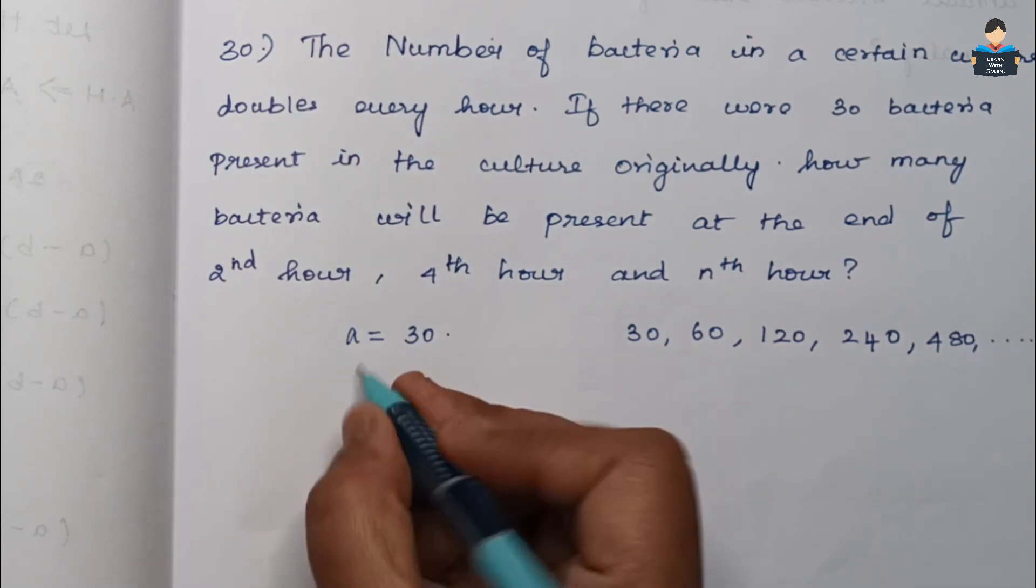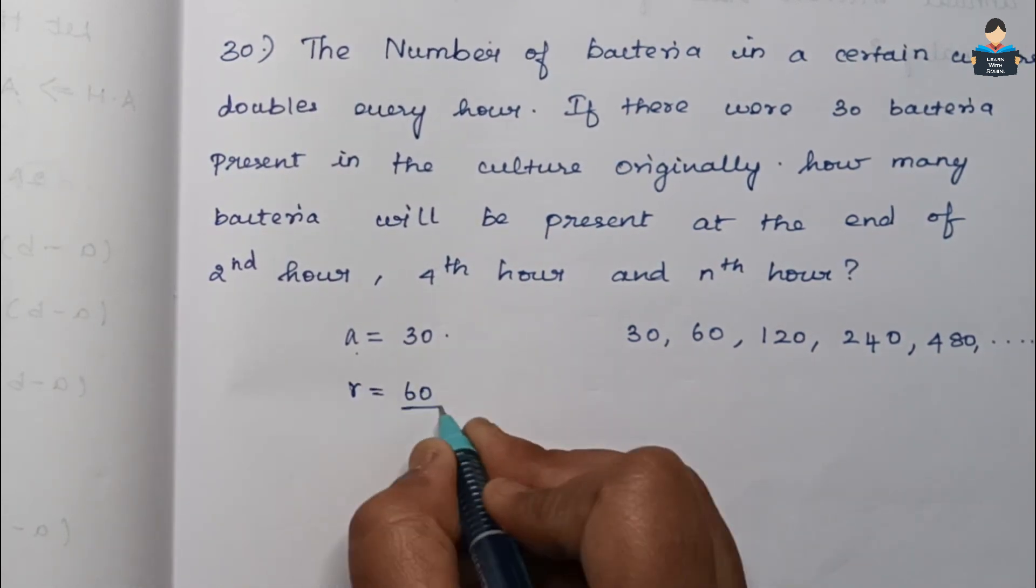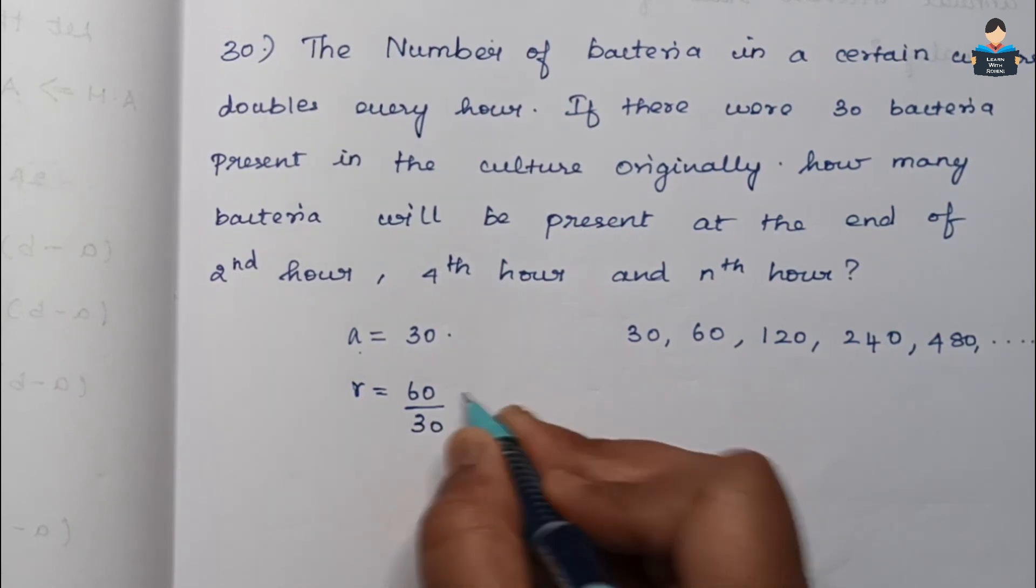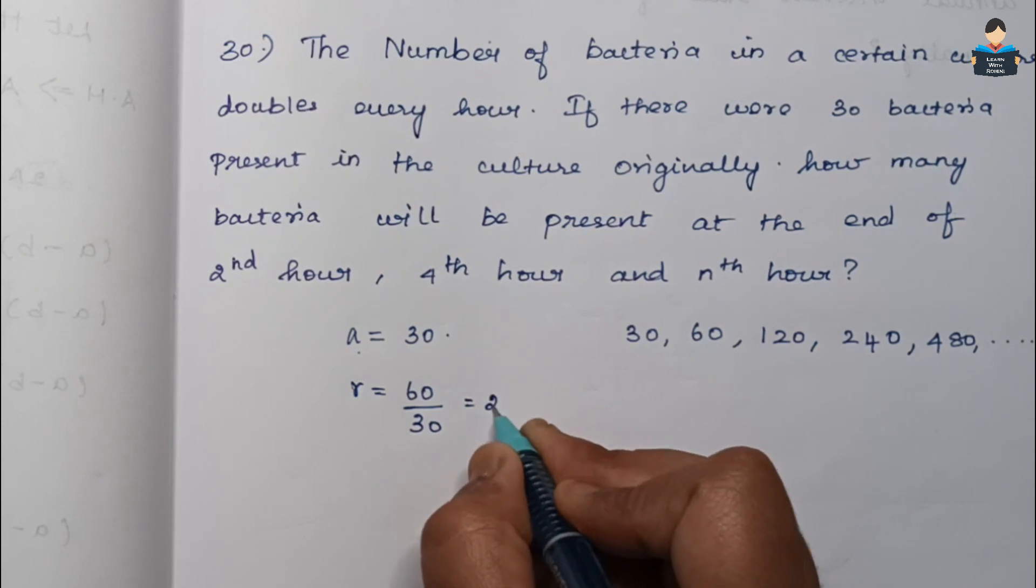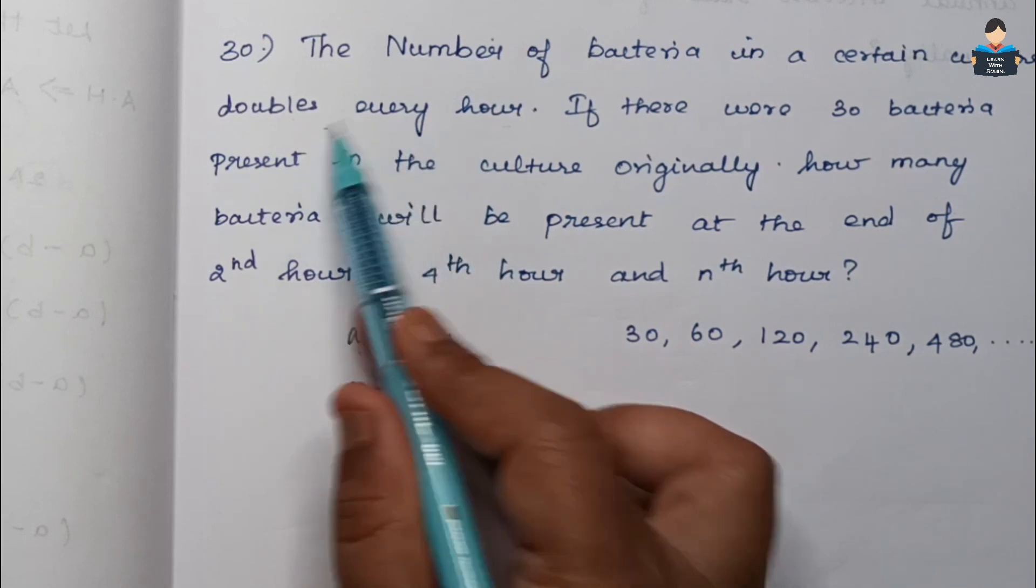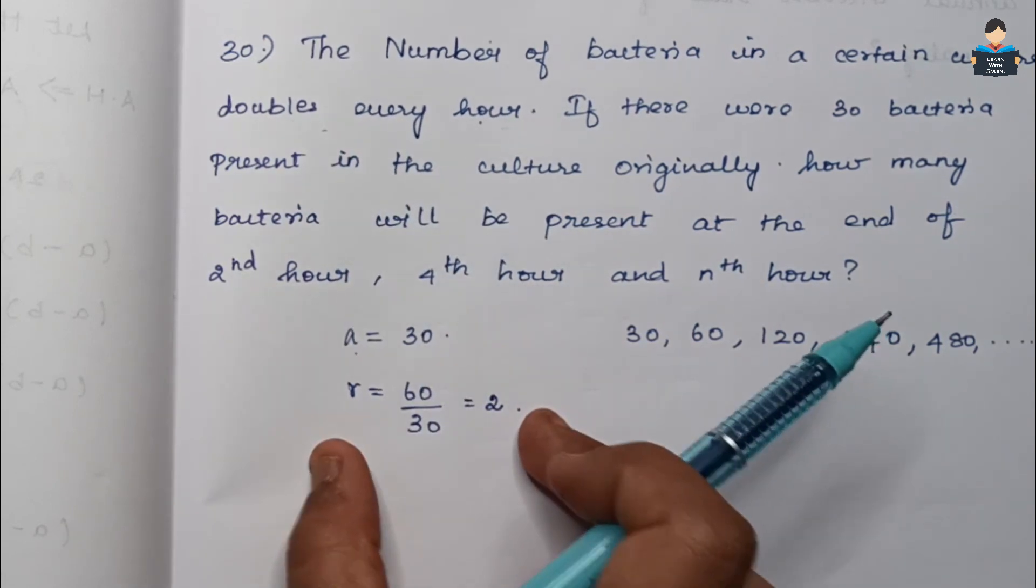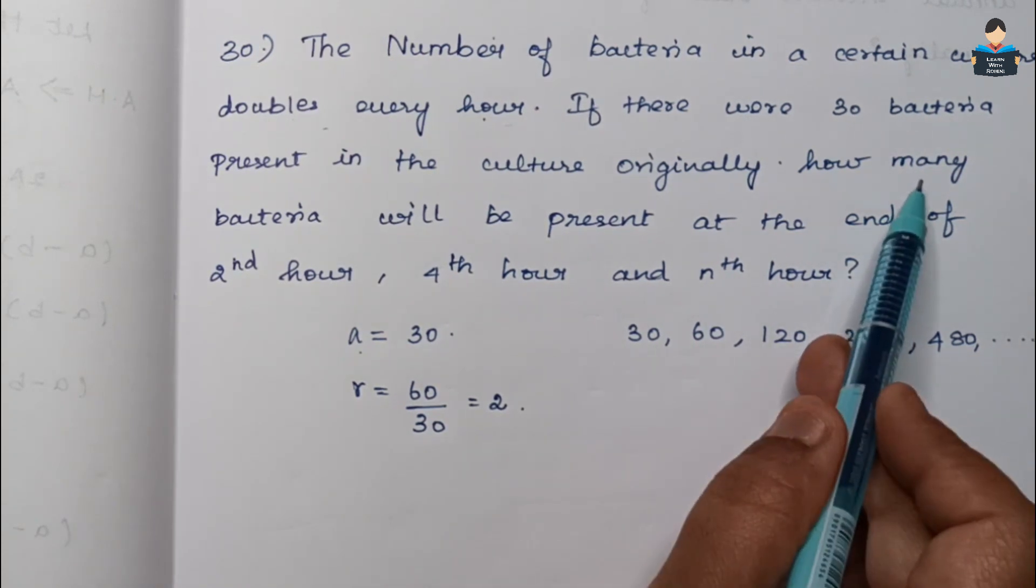So our a is 30. To find r, we calculate 60 by 30, second term divided by the first term. So our r value is 2. They've given us that it doubles every hour, so r equals 2.